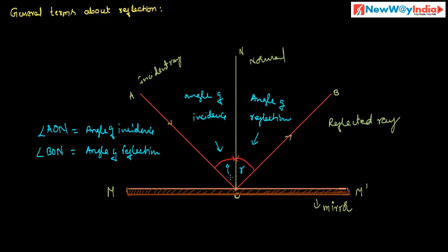The other important terms are glancing angle of incidence and glancing angle of reflection. The angle which the incident ray makes with the mirror is called glancing angle of incidence. Here, angle MOA is the glancing angle of incidence.